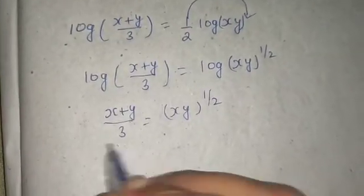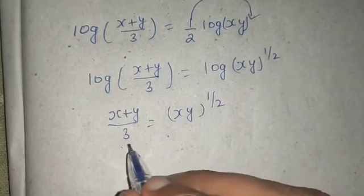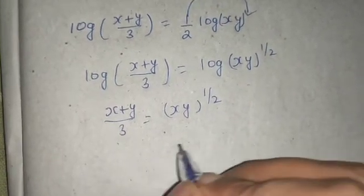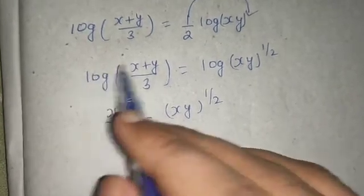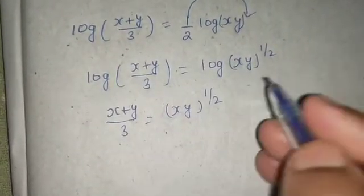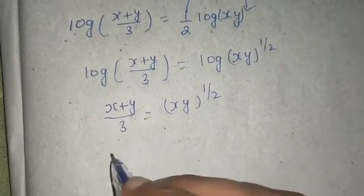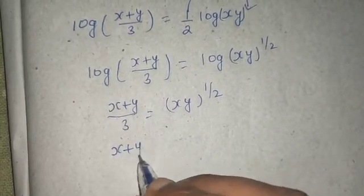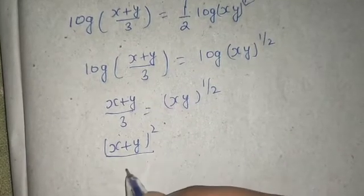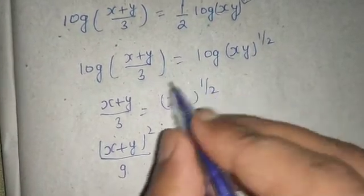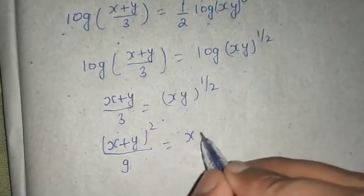What I can do now is square both sides. So if I square both sides, you can write the statement if you want that squaring both sides, removing log in this step. So if I square both sides, I will get (x+y)^2/9, and this side if you square you will simply get xy.